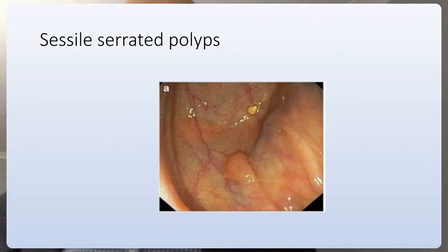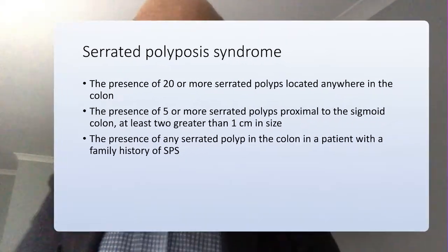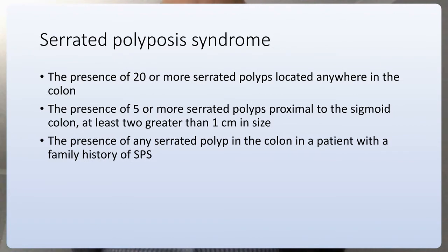On colonoscopy, a sessile polyp with no pedicle in the right colon is typical for sessile serrated adenoma — a pre-malignant condition that can acquire further mutations and lead to colon cancer. These tend to be small and can easily be missed. It is estimated that up to 6% of people over age 50 undergoing colonoscopy will have a serrated polyp. When found, they are removed and patients are placed on a surveillance colonoscopy program.